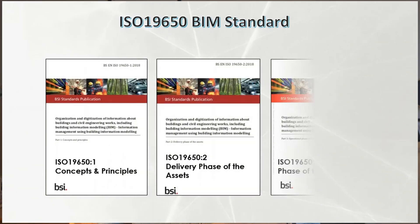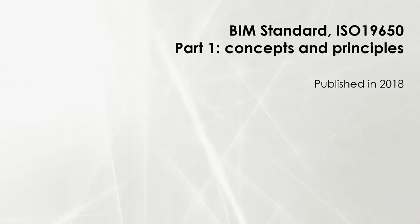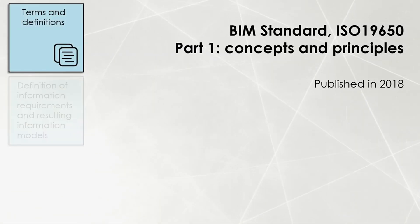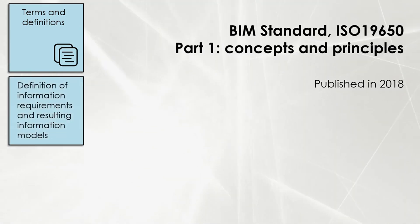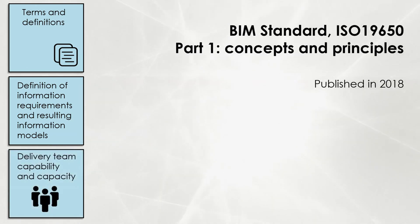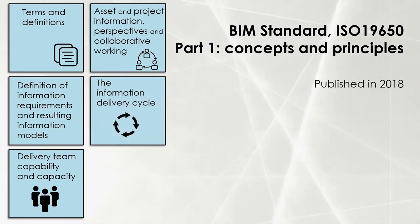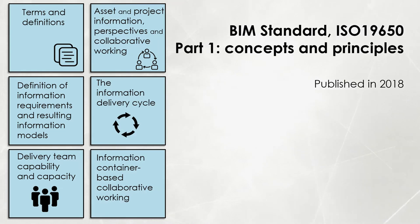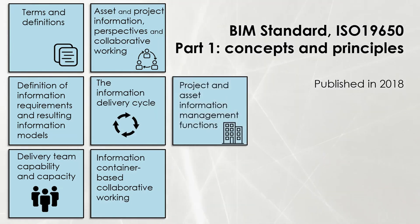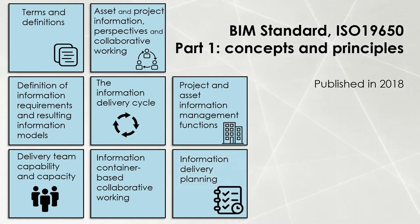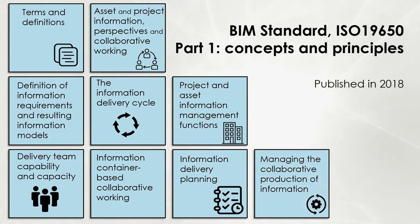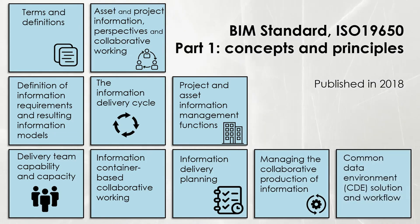ISO 19650 has multiple parts, but the most essential are Part 1 and Part 2. Part 1 covers terms and definitions, definition of information requirements and resulting information models, and delivery team capabilities and capacity — which is very important, because you sometimes over-promise to deliver something you can't. It also covers assets and project information perspectives, collaborative working, delivery cycle, project and asset information management functions, information delivery planning and management, managing the collaborative production of information, and common data environment workflow.